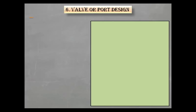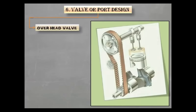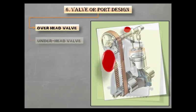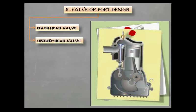Based on the valve or port design, the internal combustion engine can be classified as overhead valve. In overhead valve, the intake and exhaust port are located at the top of the cylinder. And in underhead valve, the valves are located at the bottom.